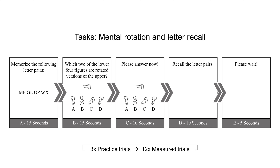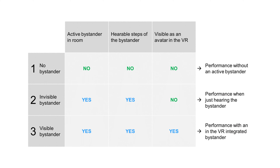These sequences were identical across all conditions. The three different conditions, of which each subject completed only one, were the no-bystander, invisible-bystander, and visible-bystander condition. In the no-bystander condition, the examiner left the room after the subject completed the three practice tries, signaled by the sound of footsteps outside the room. In the invisible-bystander condition, a bystander was physically present by walking in the room but not visualized in the subject's VR setup.